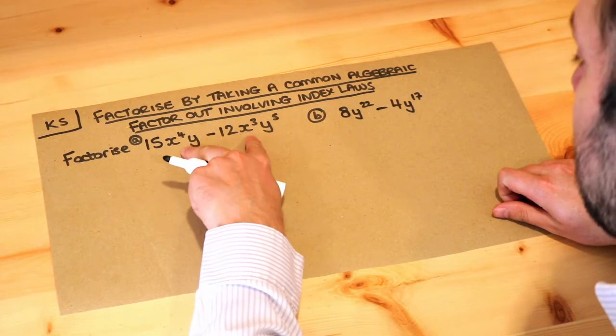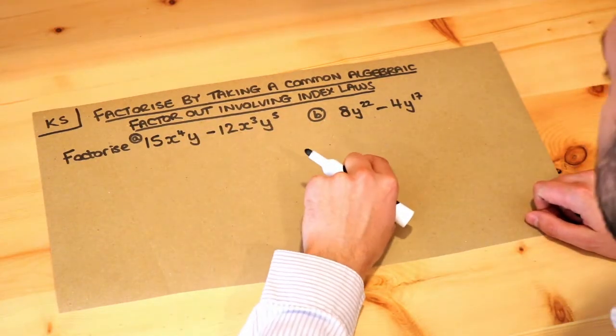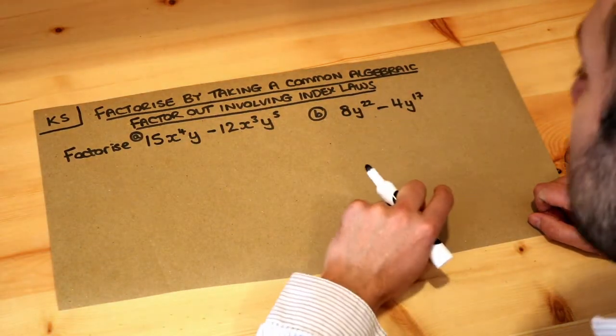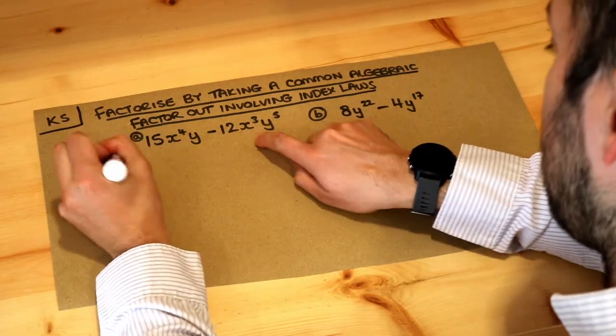Now this is factorizing by seeing what's common to both these things, but it's just a bit harder because we have to use laws of indices with high powers here like 22, 17, etc. We're going to use exactly the same principle - we're going to think what's common to this and this.